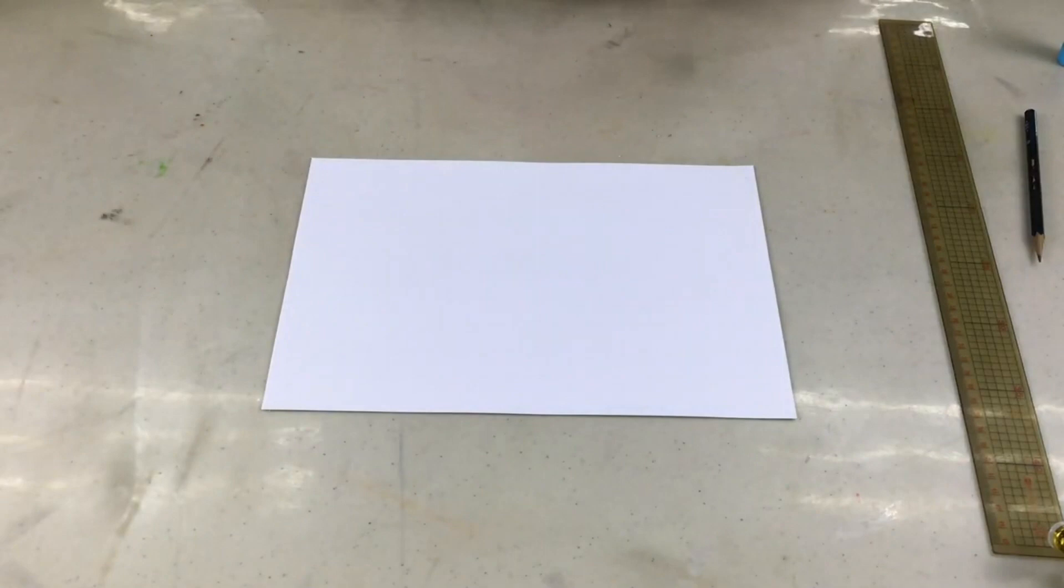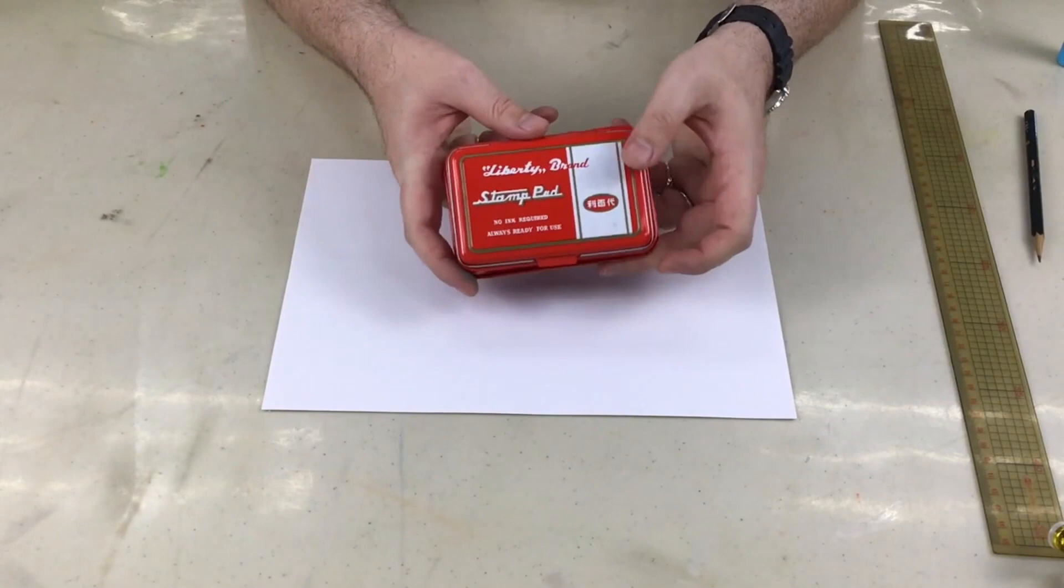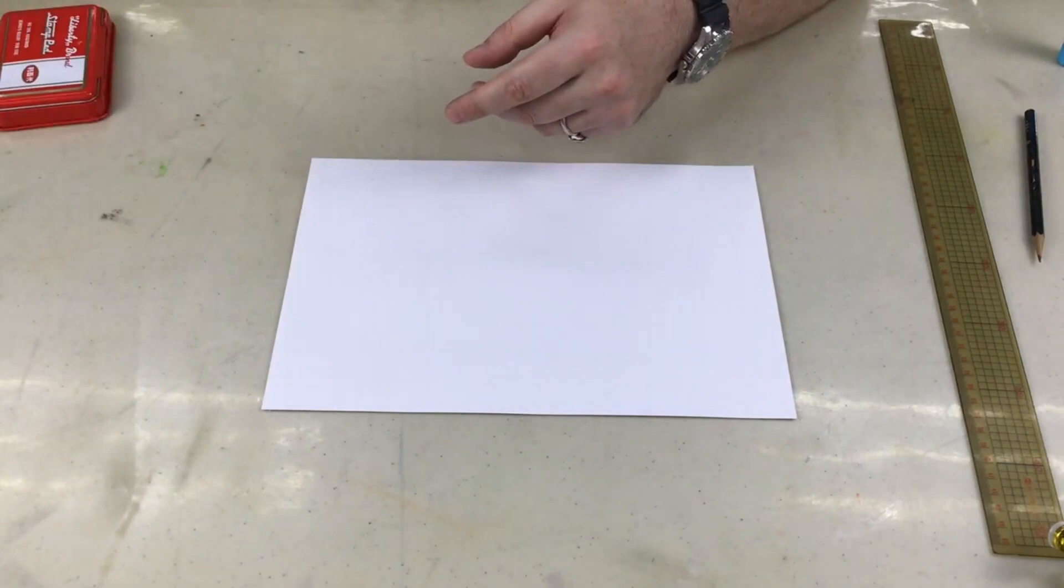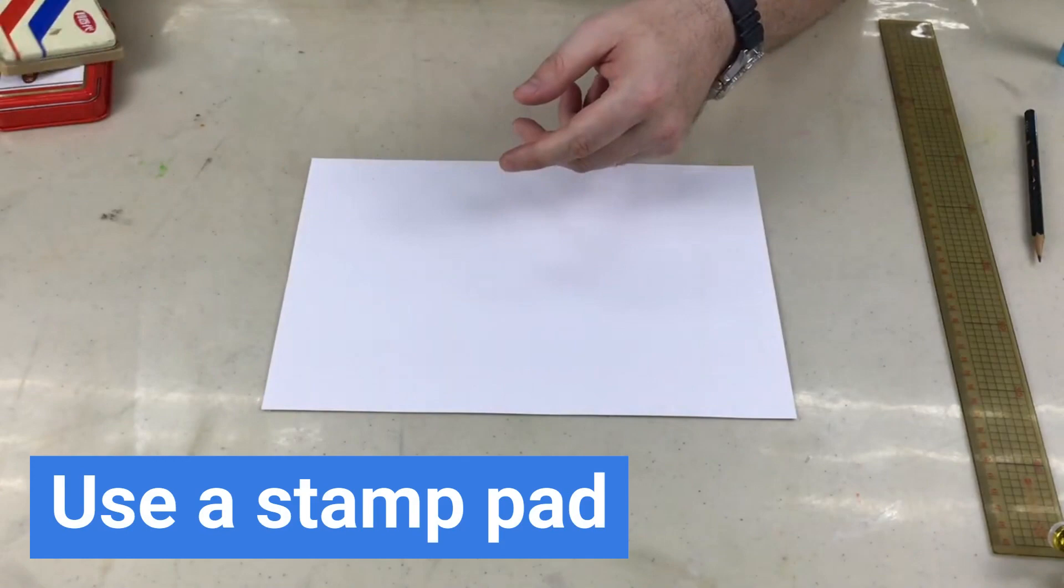What are you going to use to make thumbprints? If you have a stamp pad like this, you can use this. I have some different stamp pads in the art room here. This one has red and blue. Ooh, look at this. Many different colors.